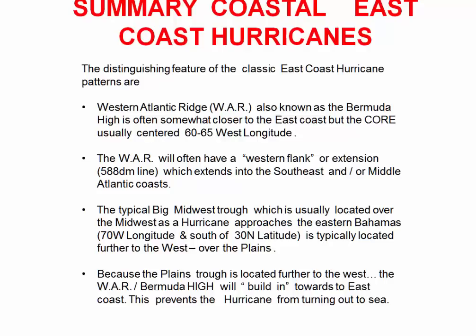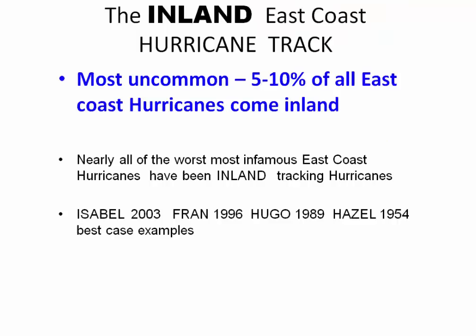Summary for coastal East Coast hurricanes: the Western Atlantic Ridge is usually centered around 60–65° west longitude. The western flank can extend toward the East Coast or even slightly inland, but the core is at 60–65° west longitude. The western flank often extends the 588-decameter line out toward the southeast coast. The typical Midwest trough is located over the Midwest as the hurricane approaches the eastern Bahamas — around 70° longitude, 30° north latitude — moving from the plains into the Midwest. Because the plains trough is further to the west, the Western Atlantic Ridge gets a chance to build slightly inland, which prevents the hurricane from turning out to sea too early — that's the classic coastal hurricane pattern.